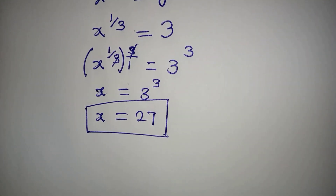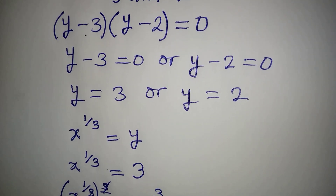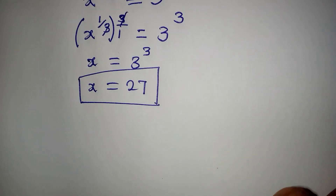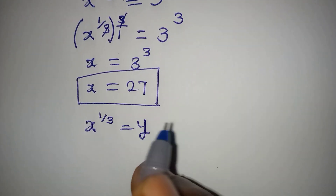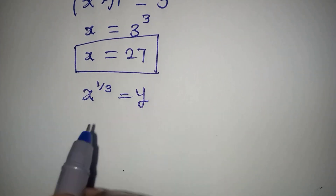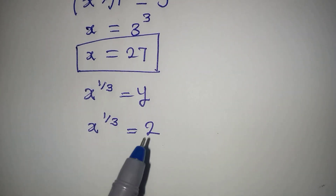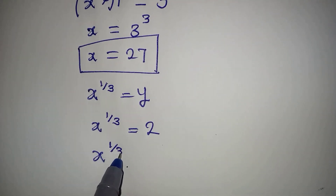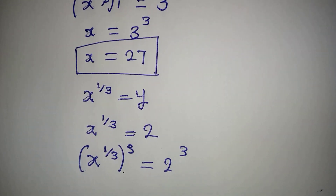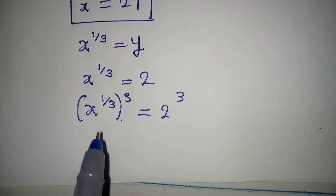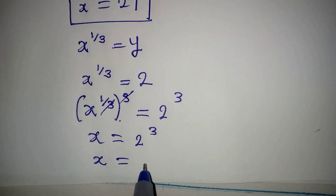We also get another value of x from the second value, y equal to 2. Remember x to the power of 1 over 3 equals y, and here y is 2, so x to the power of 1 over 3 equals 2. Raising both sides to the power of 3, we get x equal to 2 to the power of 3, meaning x equals 8, because 2 to the power of 3 is 8.